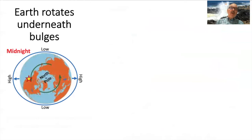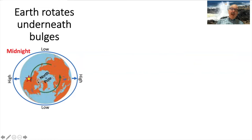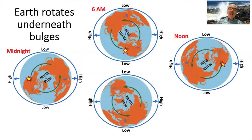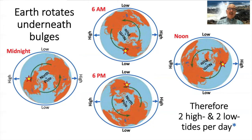The earth rotates underneath the bulges. Looking down on the north pole of the earth, we have a high tide on one side and on the other. Think about the moon being to your right. Here in the Pacific Northwest, at midnight we happened to be under a high tide. But six hours later, we have rotated around under a low tide. Another six hours, it's back to a high tide. Then the final six hours, we're at a low. And then back to midnight, we are back under the high. So in each 24-hour period, we get two highs and two low tides per day.